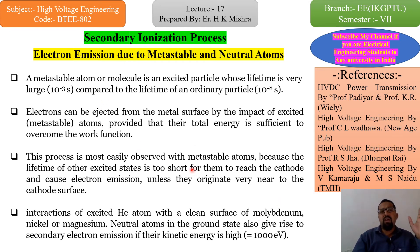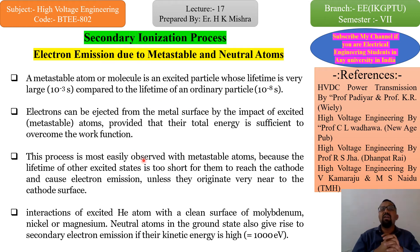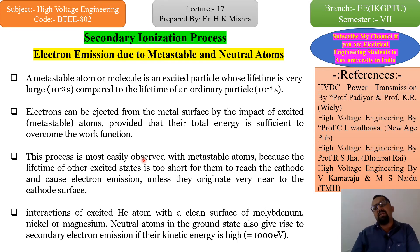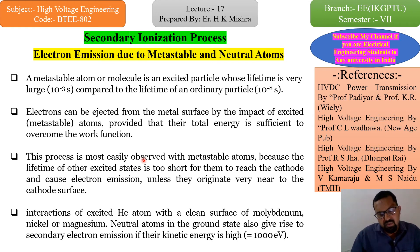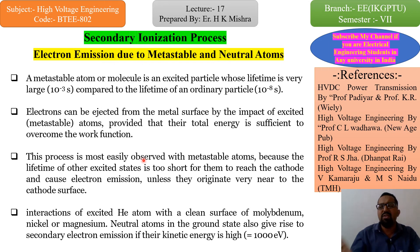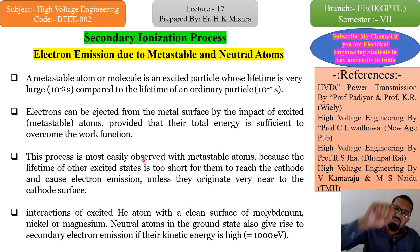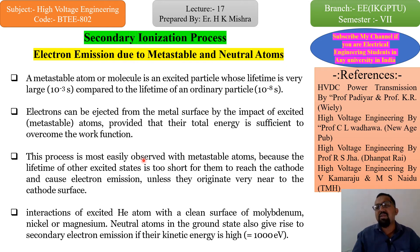So these are the three different methods of secondary ionization process. In an exam, the direct heading asked is: what is secondary ionization? — explain it. The first is ionization by collision, the second is due to photo ionization, and the third is electron emission due to metastable and neutral atoms. This is the secondary ionization process: first ionization generates one electron, and based on that single electron, the entire further ionization proceeds through secondary ionization.